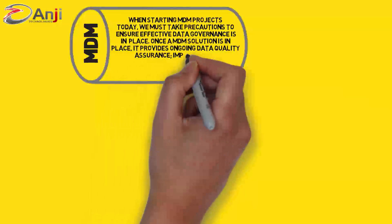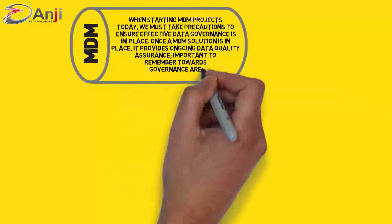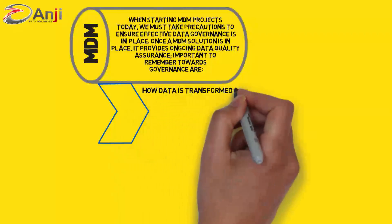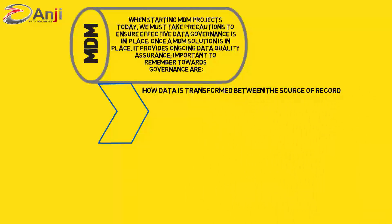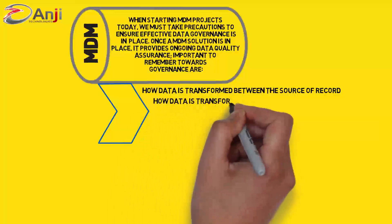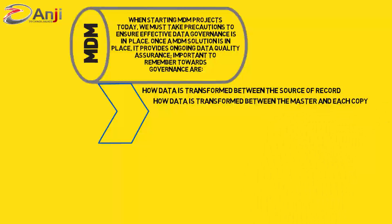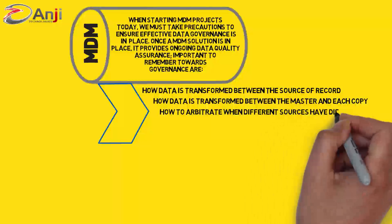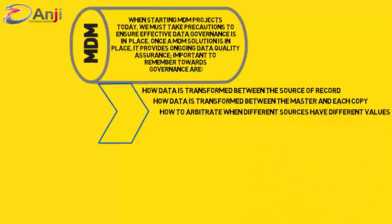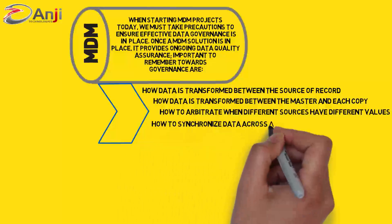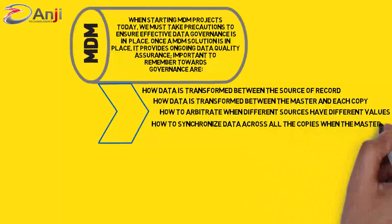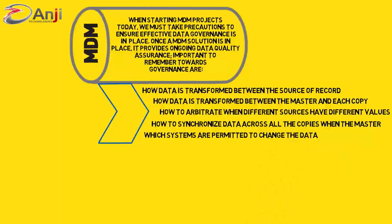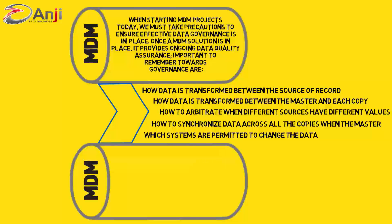It is important to remember the following with respect to data governance: how data is transformed between the source of record and the master; how data is transformed between the master and each copy; how to arbitrate when different sources have different values; and how to synchronize data across all copies when the master changes.